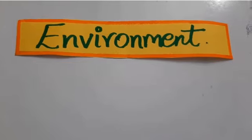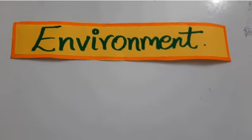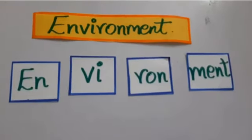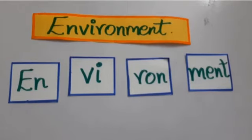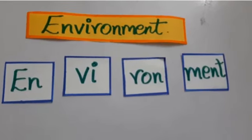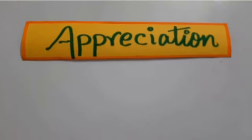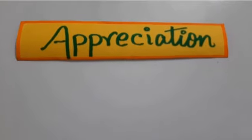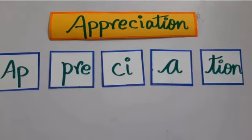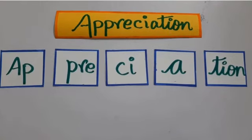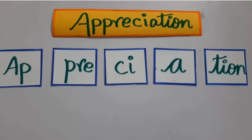Environment — en-vi-ron-ment — we can hear four vowel sounds, so it is a tetrasyllable word. Then, appreciation — a-pre-ci-a-tion — five syllable word, so it is polysyllable.